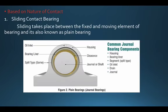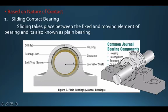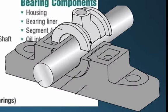The next classification is based on the nature of contact. The first category is the sliding contact bearing. As the name indicates, sliding takes place between the fixed and moving element of the bearing, also known as a plain bearing. We have two elements: the shaft, which is the moving element, and the bearing, which is the fixed element. The moving shaft is supported by the fixed housing through this arrangement.